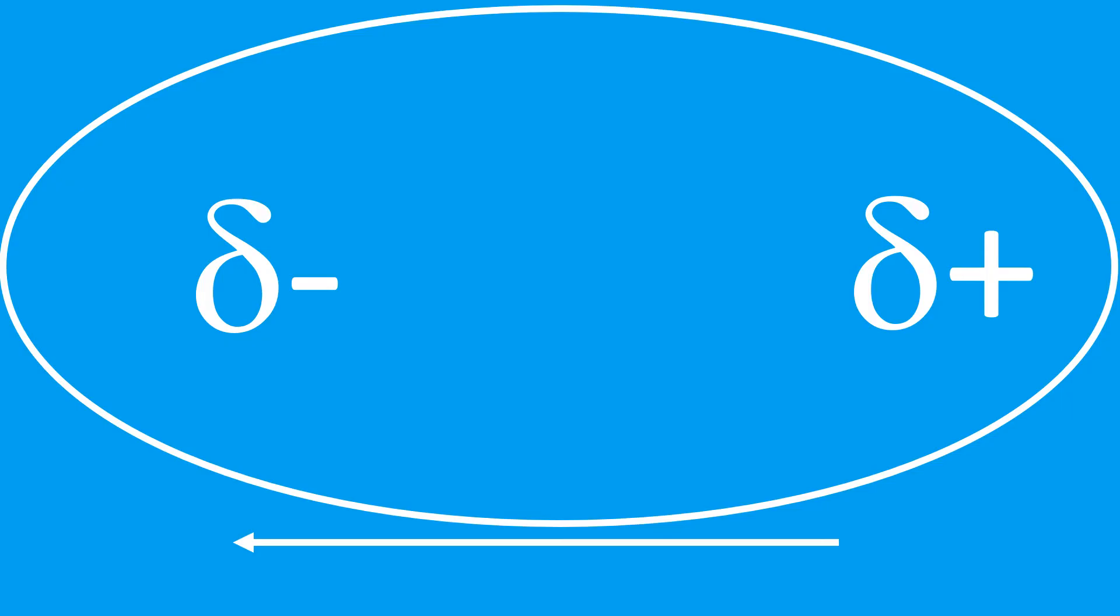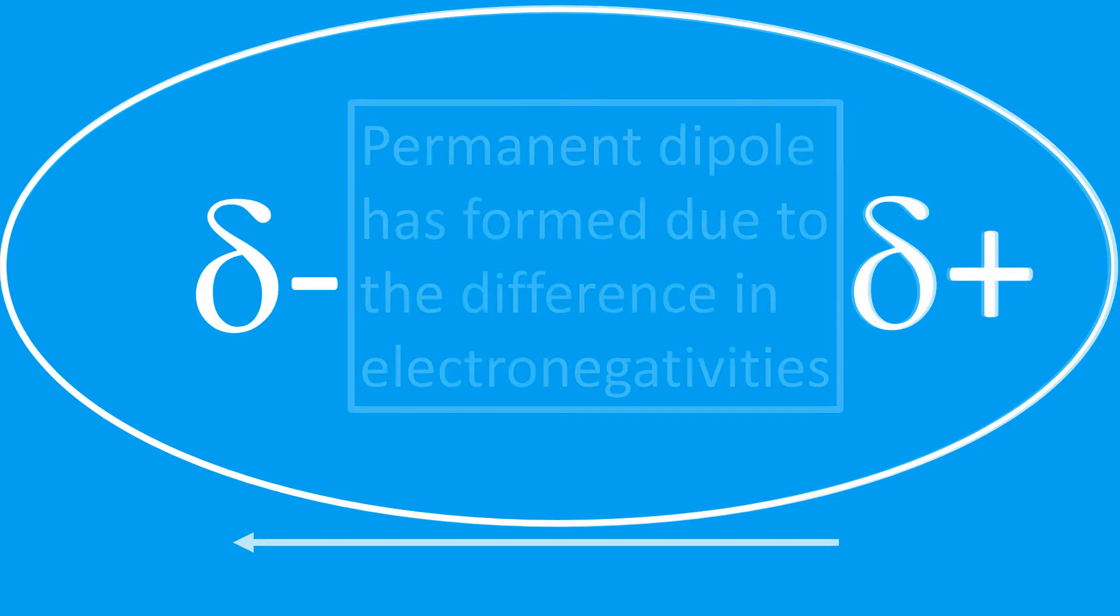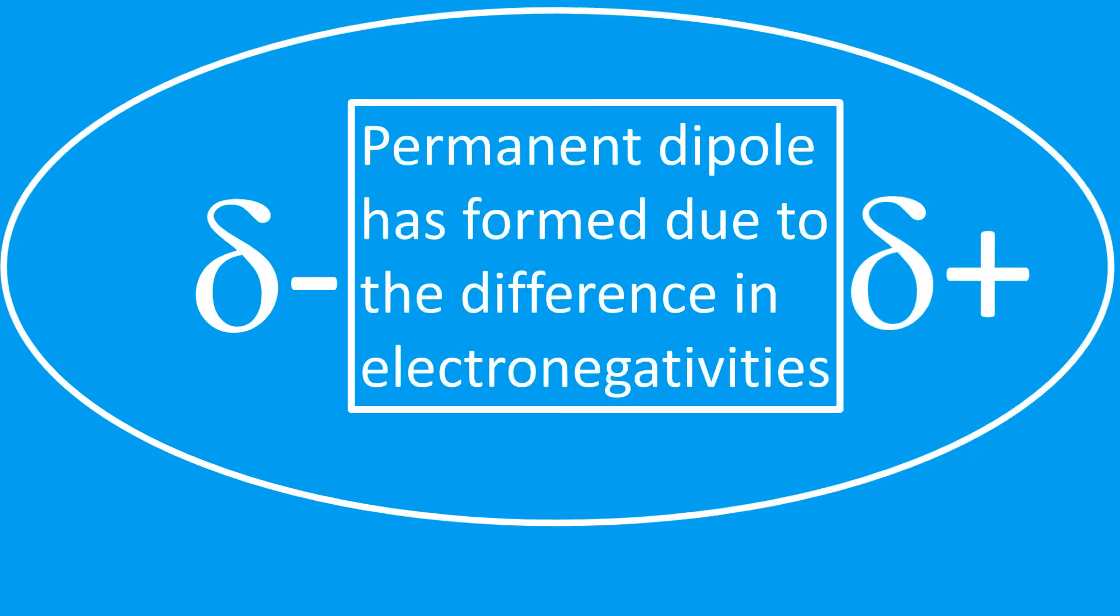So here I'm representing the molecule and I'm showing that one side is slightly negative. That's what this delta symbol stands for. The other side of the molecule is delta positive, slightly positive. And this is due to that bond being polar, and that was due to the difference in electronegativities which we've seen in a previous video.